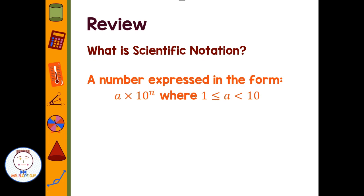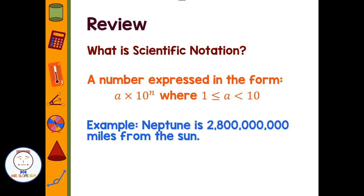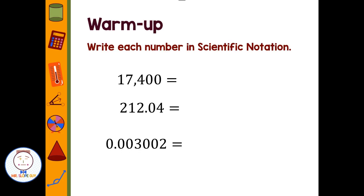Times the power of ten. For example, Neptune is two billion eight hundred million miles from the sun. If we were to write this in scientific notation, we'd want to put the decimal between the two and the eight to make it a number between one and ten, which means it would have nine place values to move. So the number in scientific notation would be 2.8 times 10 to the ninth power.